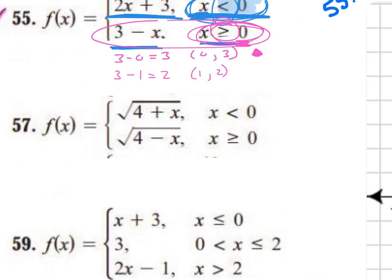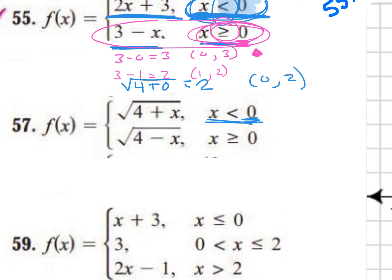So example 57 is a little special, because we have square roots. What can we not have under a square root? A negative number. So not only do we have to follow the restriction given, we also have to make sure we're not plugging in negative numbers. For our first piece of the graph, what numbers should we plug in first? Zero. So I'm going to have the square root of 4 plus 0. What's the square root of 4 plus 0? Two. So I plugged in 0 and got 2. Am I going to have an open or closed circle here? An open circle, because it's just a less than sign, not less than or equal to.